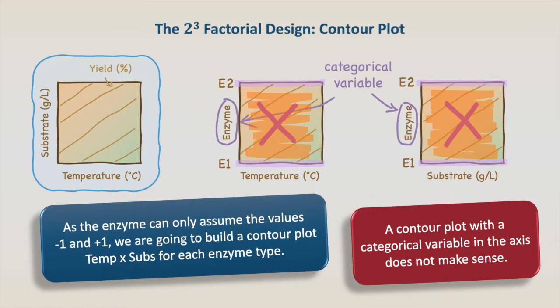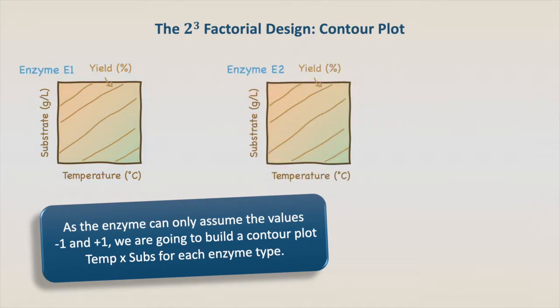As the enzyme can only assume the levels -1 and +1, E1 and E2, we are going to build a contour plot temperature x substrate for each enzyme. We will have substrate-temperature for enzyme E1 and substrate-temperature for enzyme E2. Let's use RStudio to build the contour plots.